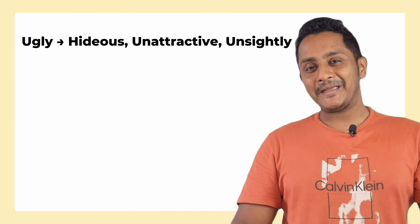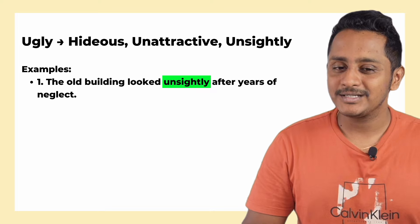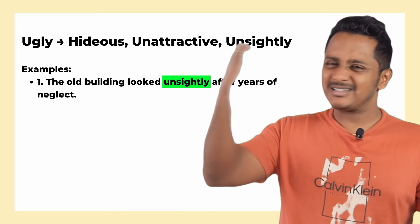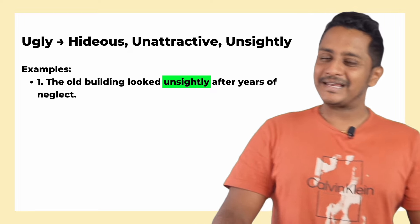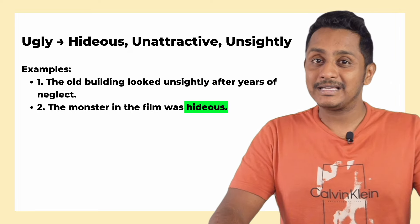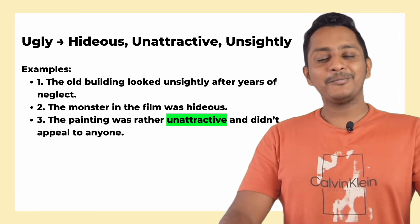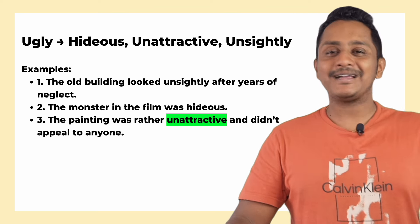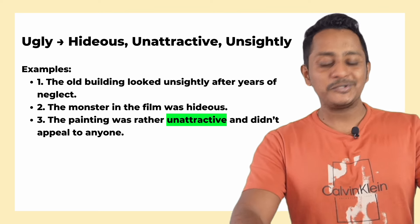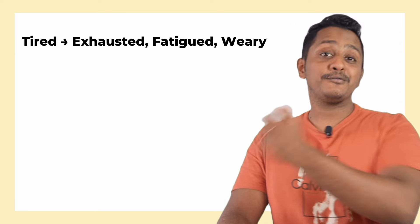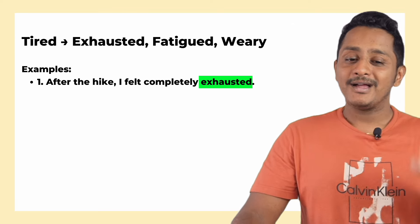The next word is 'ugly.' Alternatives are: hideous, unsightly, and unattractive. For example, instead of 'the old building looked ugly after years of neglect,' say 'the building looked unsightly' — unsightly means unpleasant to look at. Instead of 'the monster in the film was ugly,' say 'the monster was hideous.' Instead of 'the painting was rather ugly,' say 'the painting was rather unattractive and didn't appeal to anyone.'